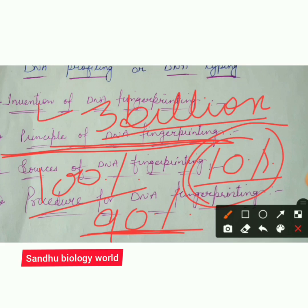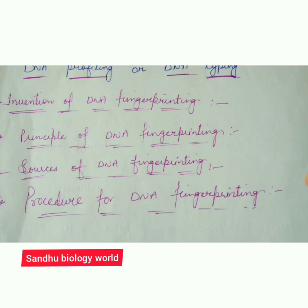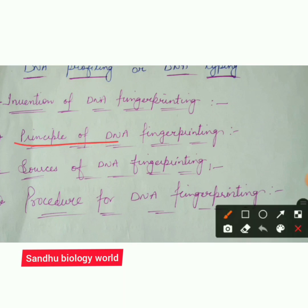So out of 100 percent, 90 percent DNA is similar among humans, which means about 10 percent DNA is dissimilar — it does not match. This 10 percent DNA is very important, and that is why we use this technique.